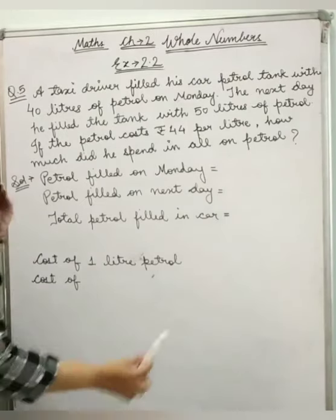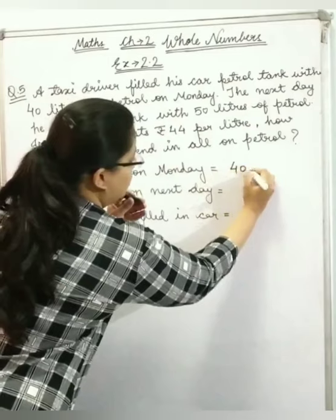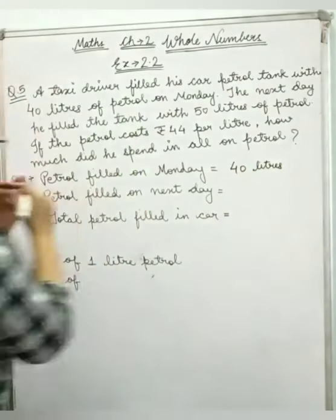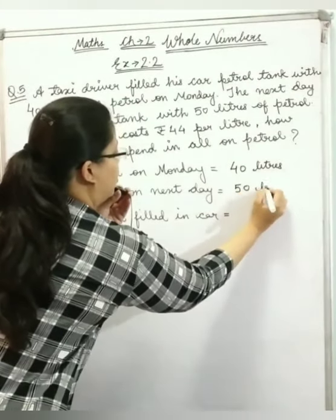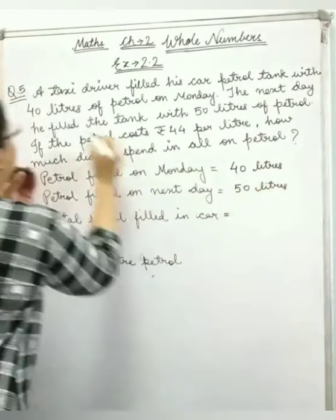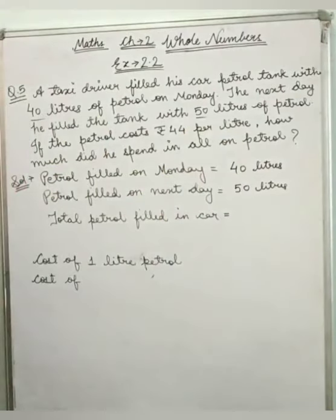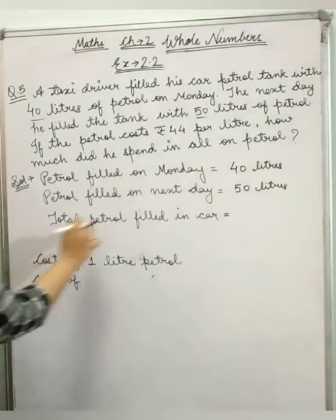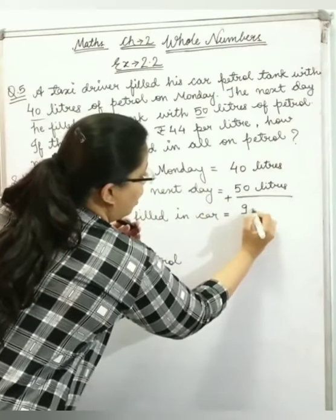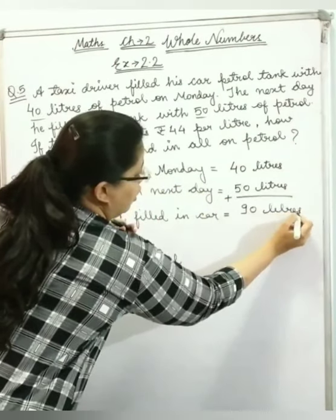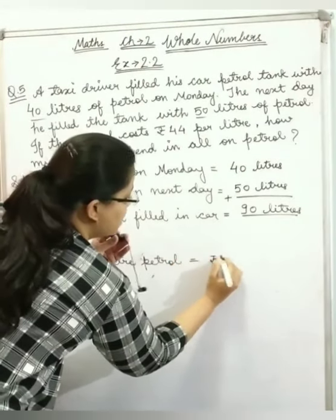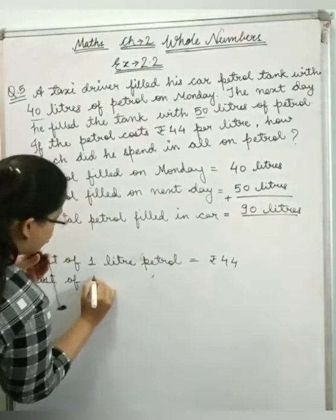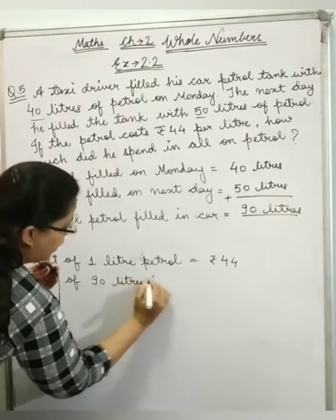So, petrol filled on Monday: 40 litres. Petrol filled on next day: 50 litres. Total petrol filled in car is 90 litres. Now, cost of 1 litre petrol is 44. So, cost of 90 litres of petrol is 44 multiply by 90.